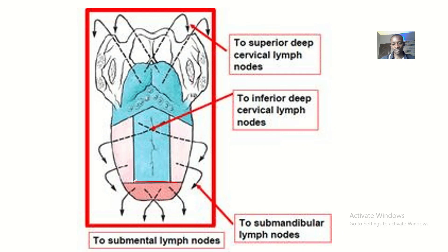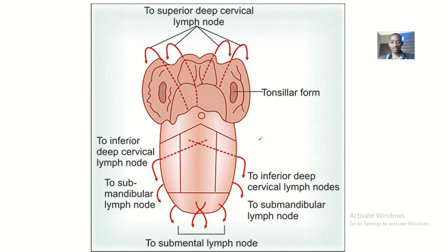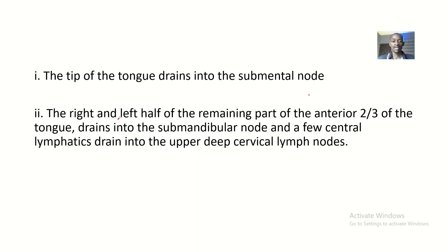The tip of the tongue drains to the submental lymph nodes. You can see the arrows indicating this. The tip of the tongue drains to the submental lymph node.